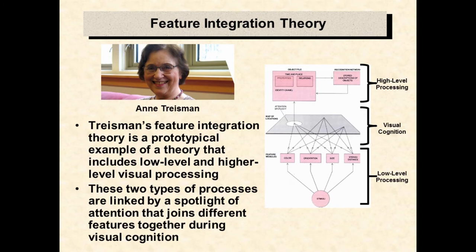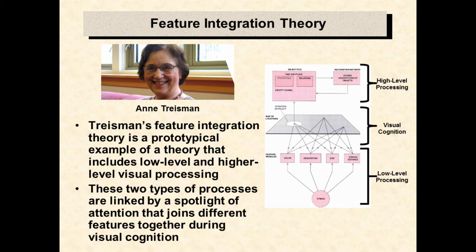An important example of a modern yet classical theory of visual processing is Anne Treisman's feature integration theory. According to this theory, vision begins when low-level processes separate stimuli into their component features. These features are represented as locations of activity on different feature maps. When required, a middle level of visual cognition can direct a spotlight of attention to a specific location in a master map, gluing together all features present at that location. The feature conjunctions created by visual cognition can then be linked to object descriptions called object files, which can be processed by higher-level reasoning.